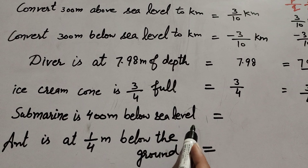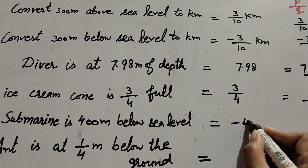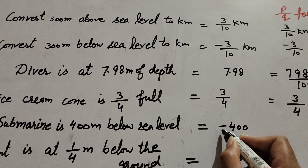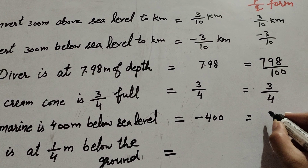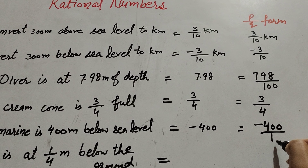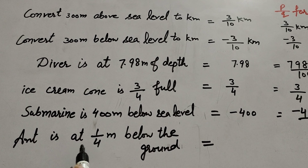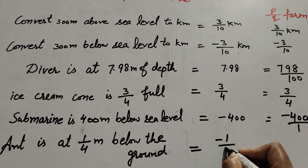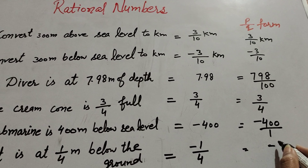A submarine is 400 meters below sea level. It is below sea level, so we write minus 400. Minus 400 can also be written in p over q form by writing 1 in its denominator: minus 400 over 1. An ant is at 1 over 4 meter below the ground — it is also below the ground, so we write minus 1 over 4. Minus 1 over 4 is also p over q form.